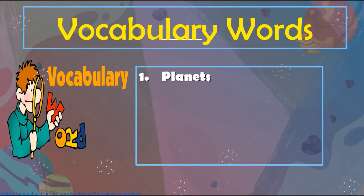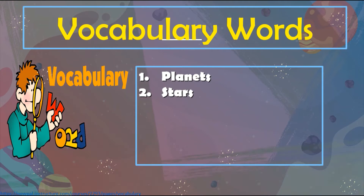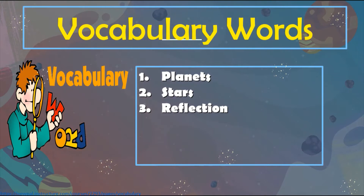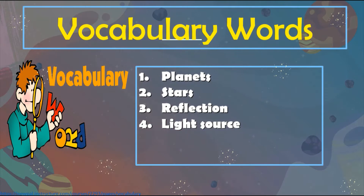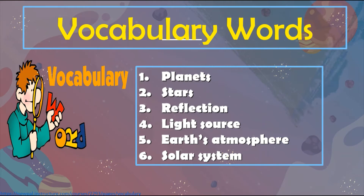Vocabulary Words. I want you to repeat each word after I read them. Number one: Planets. Number two: Stars. Number three: Reflection. Number four: Light source. Number five: Earth's atmosphere. Number six: Solar system.